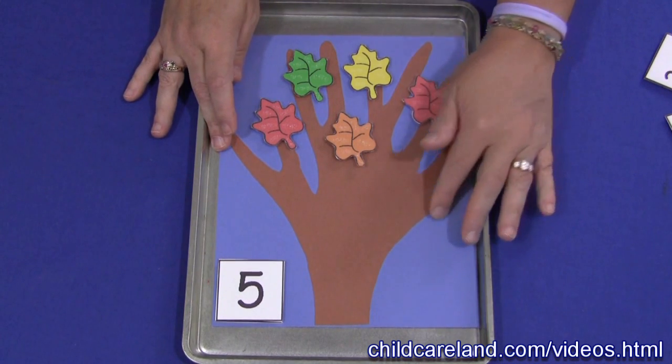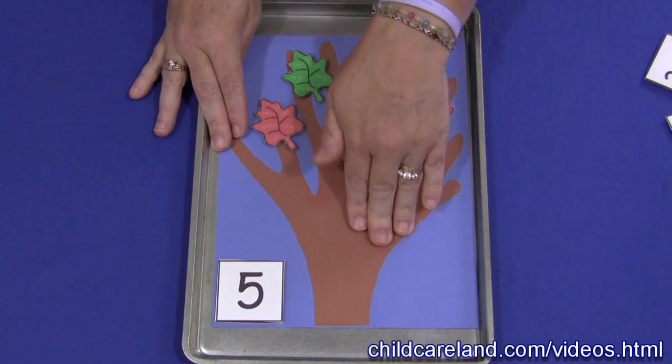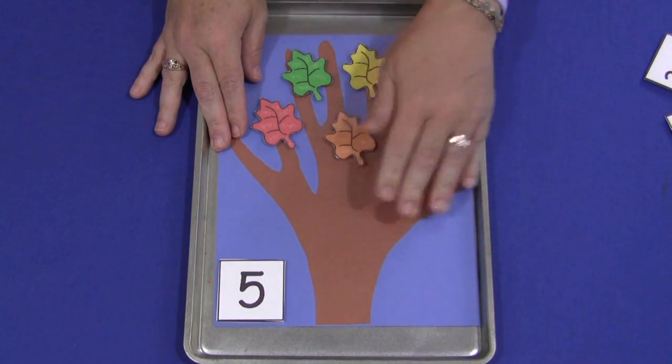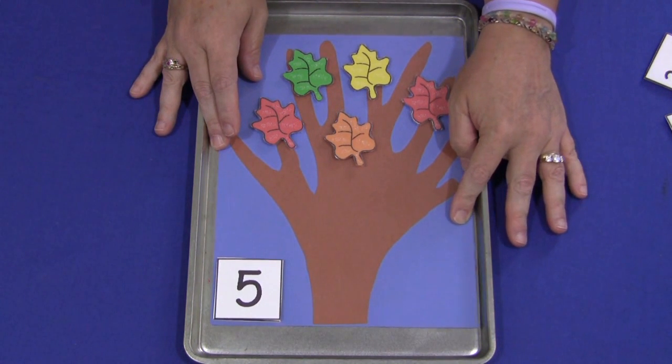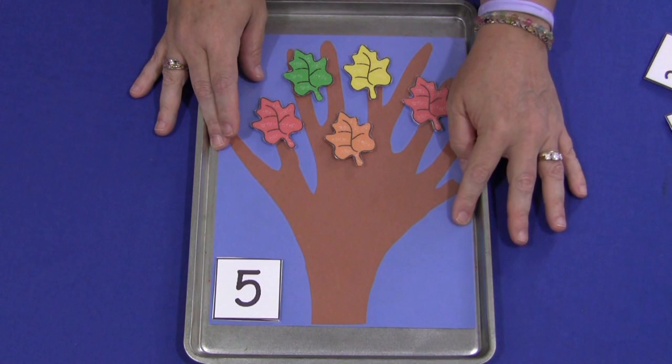For the tree mat, I just cut out a tree on brown construction paper and then I glued it onto blue cardstock paper. You can use construction paper as well, and then I laminated that.